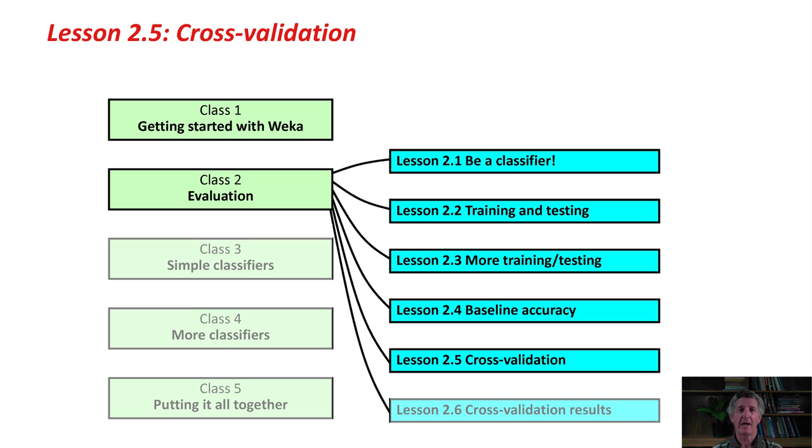A couple of lessons back, we looked at evaluating on an independent test set, and we also talked about evaluating on the training set. We also talked about evaluating using the holdout method by taking the one data set and holding out a little bit for testing and using the rest for training. There's a fourth option on Weka's classified panel, which is called cross-validation, and that's what we're going to talk about here.